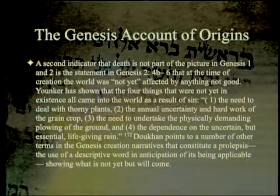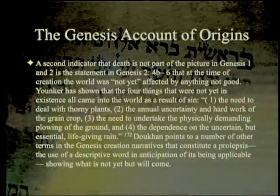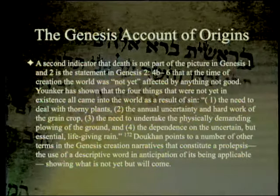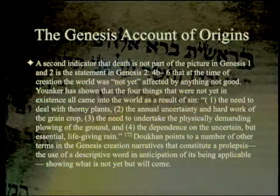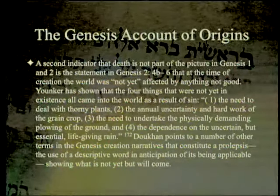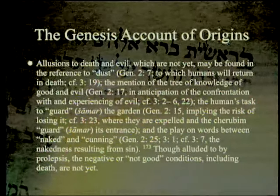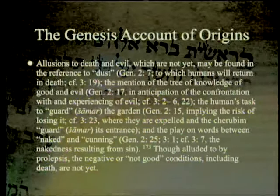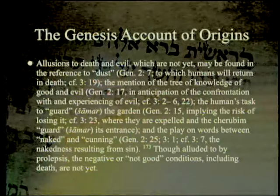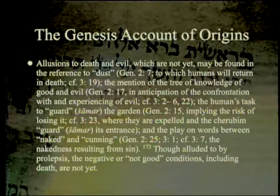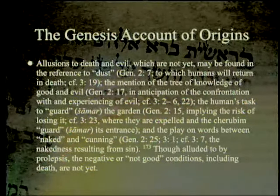A second indicator: Genesis 2:4b-6 shows the world was not yet affected by anything not good. Yonker shows four things not yet in existence all came into the world through sin: dealing with thorny plants, the annual uncertainty and hard work of the grain crop, the physically demanding plowing of the ground, and dependence on the uncertain but essential life-giving rain. Ducon also notes proleptic terms in the creation narrative: allusions to dust (to which humans return in death), the tree of knowledge of good and evil, the task to 'guard' (shamar) the garden implying risk of losing it, and the play on words between 'naked' and 'cunning.'